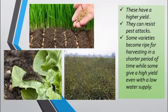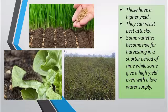These improved seeds also resist pest attacks. Some varieties of crops give a good harvest in a short period of time. On the other hand, some varieties may require less water but can give a higher yield of production — a good amount of crop is ready even with a low amount of rain or low water supply to the farm.